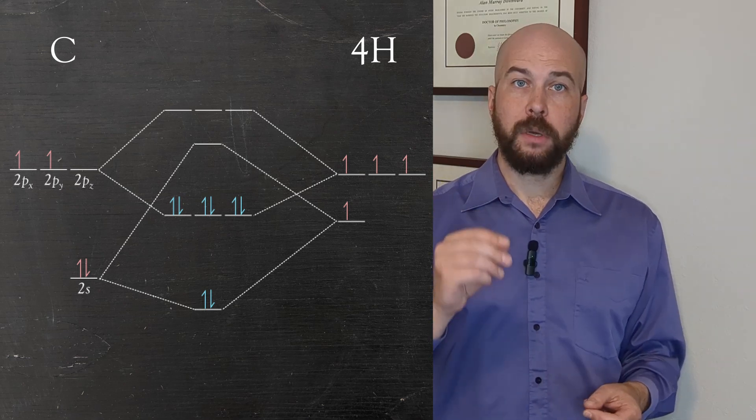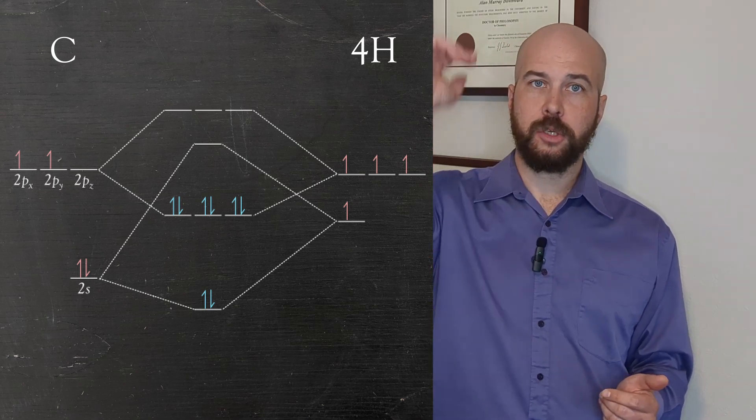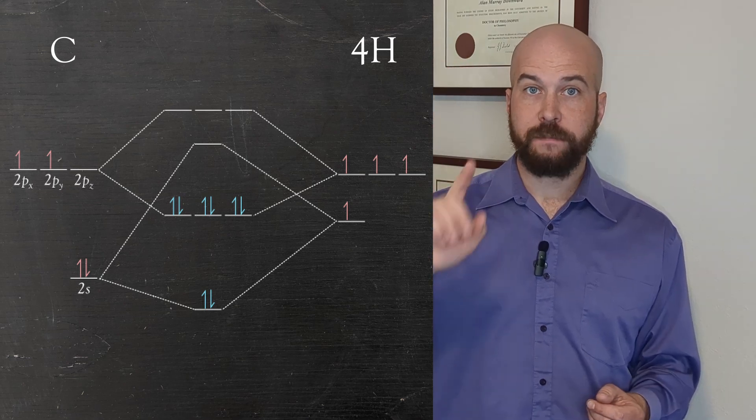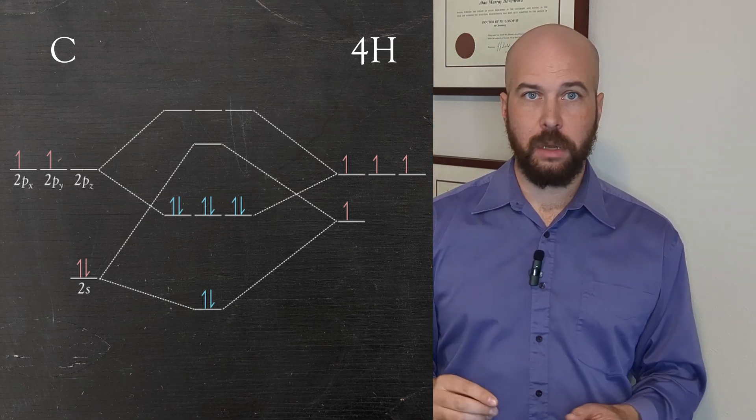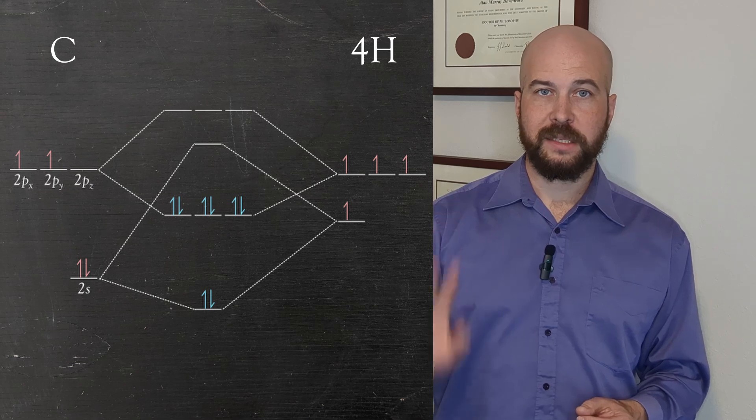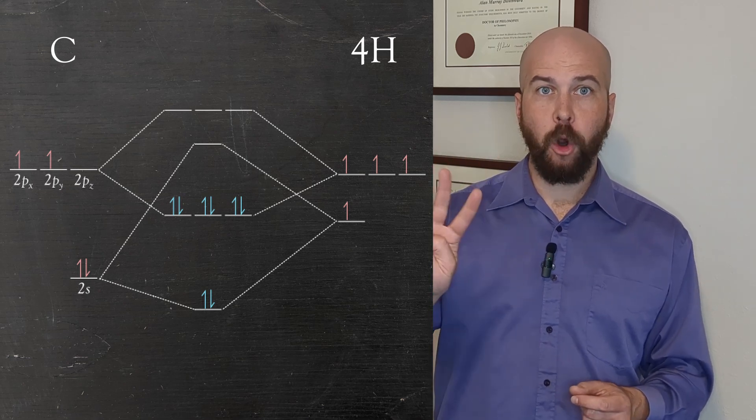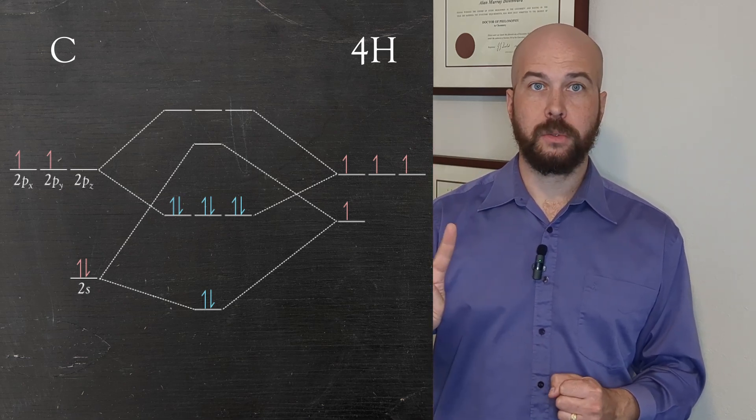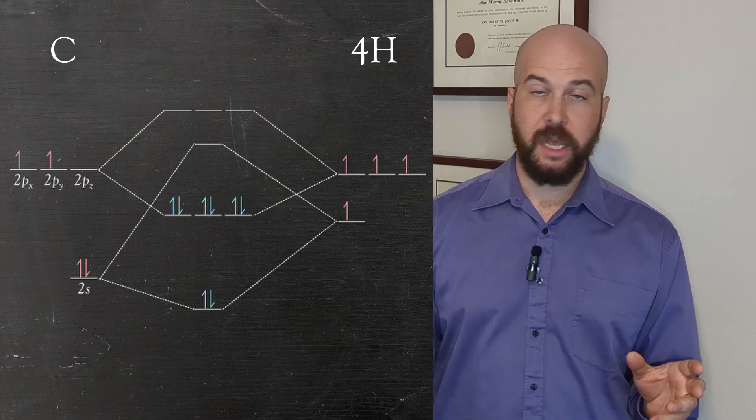We now put in our eight electrons filling from the bottom towards the top and once we have put in all of those electrons we can look and see that we have four full bonding orbitals and no electrons anywhere else. So molecular orbital theory is predicting that there are four bonds in methane, which is what we would expect from other simpler theories like Lewis dot structures.